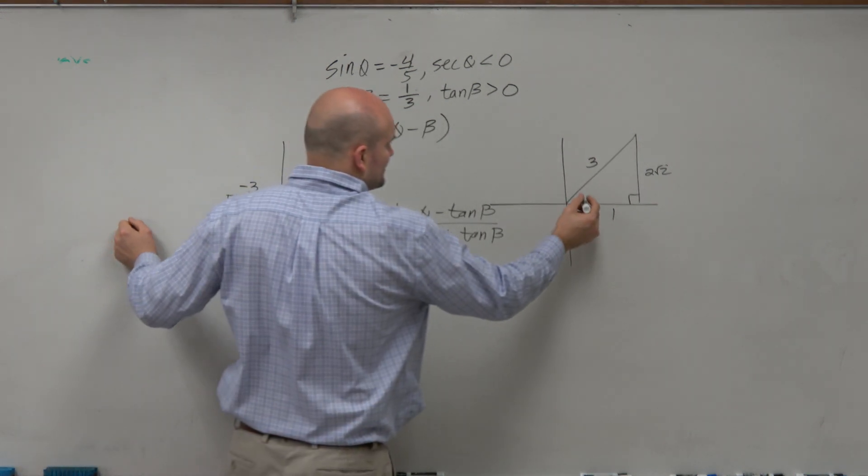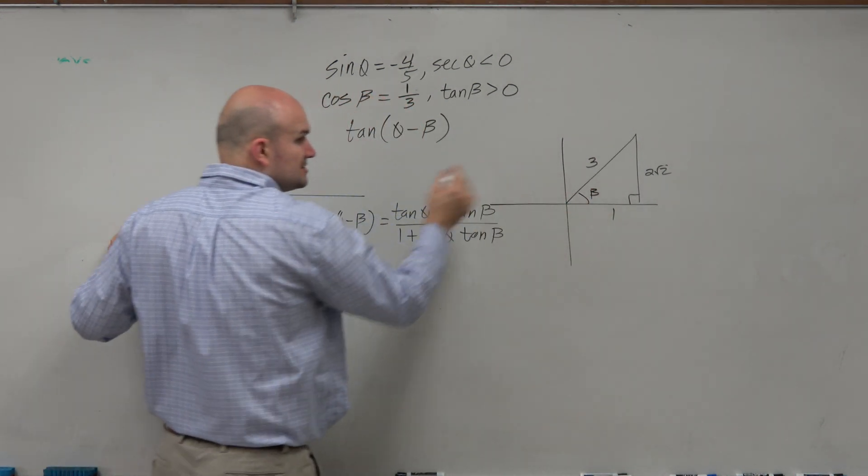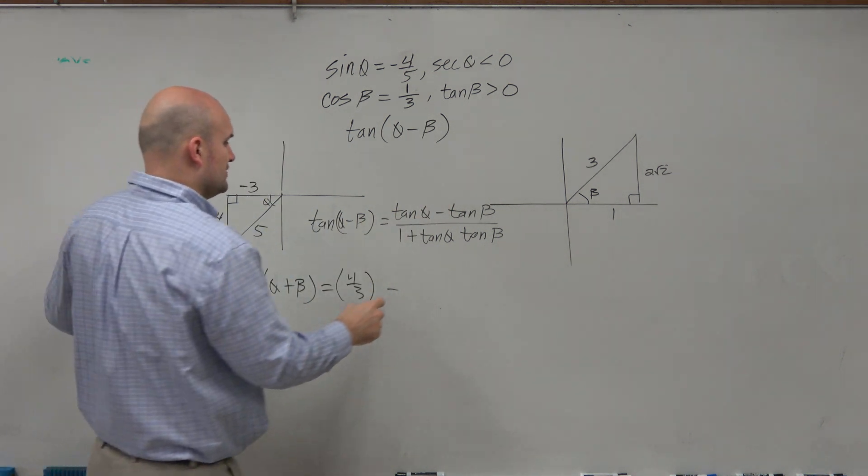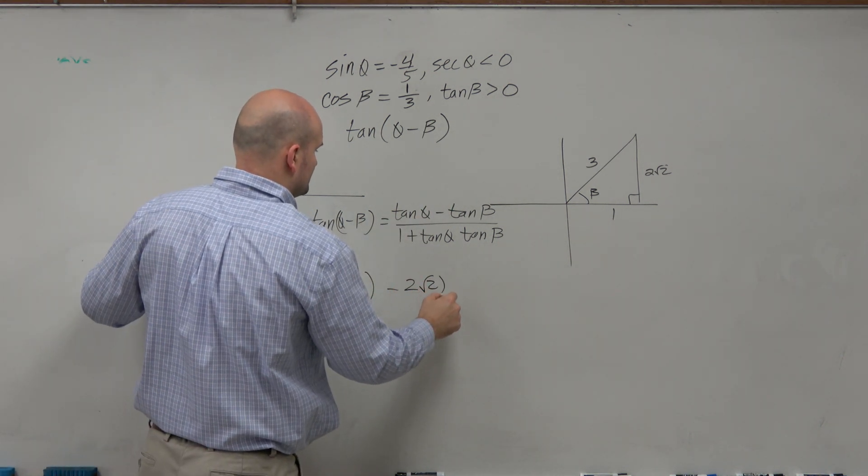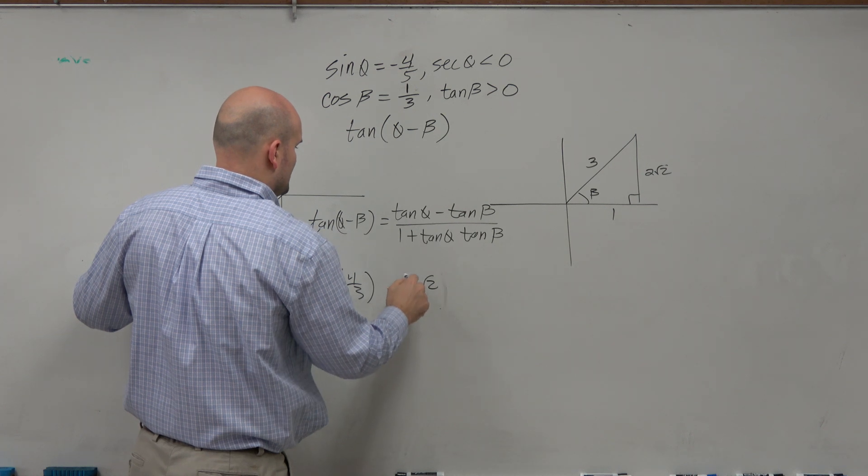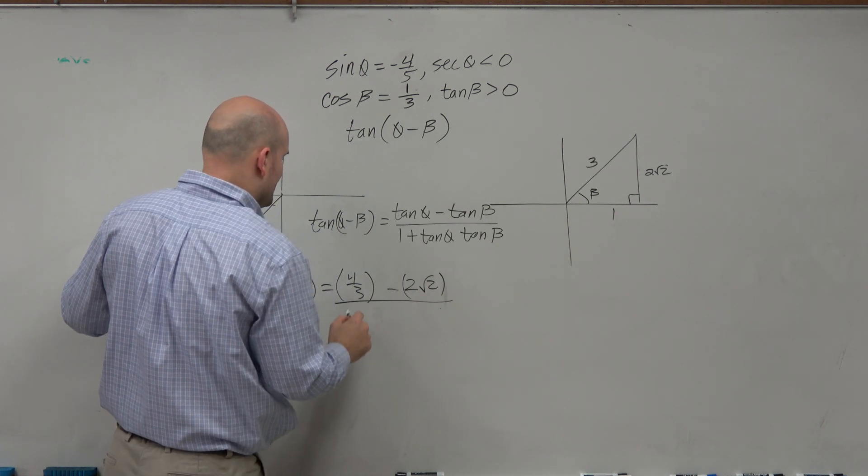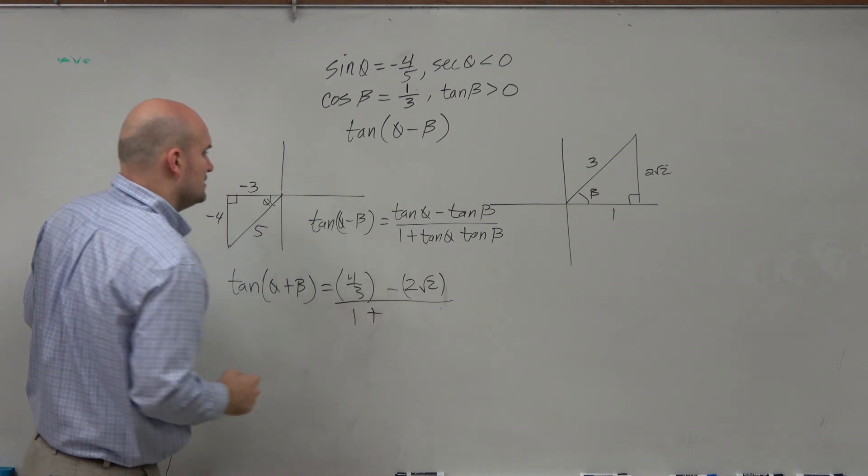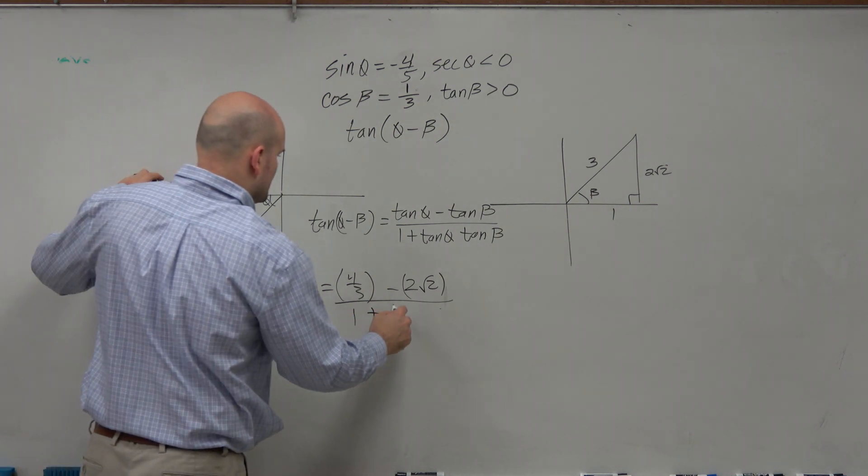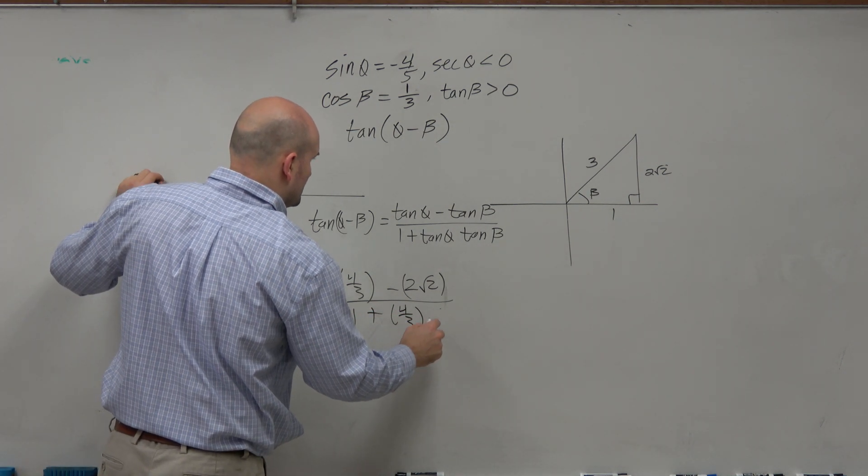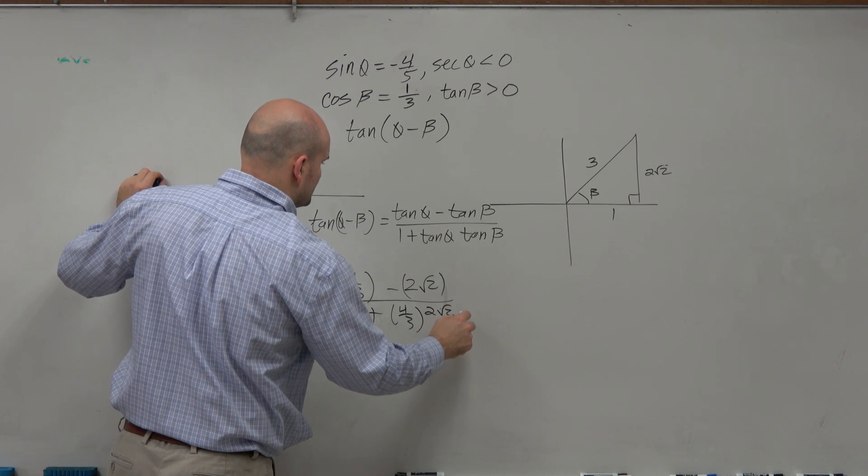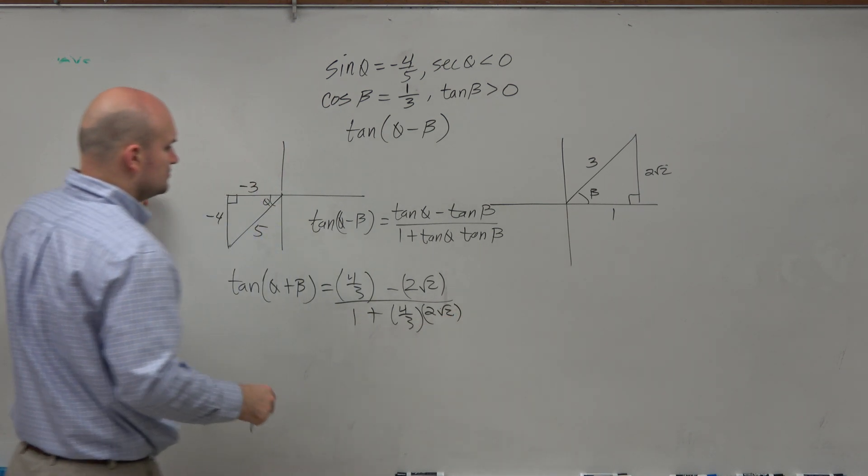Tangent of beta. Oops, I forgot to write in the beta. Remember, we're using the right angle. It's going to be 2 square root of 2. I'm just going to put this in parentheses. And then it's going to be 1 plus 4/3 times 2 square root of 2.